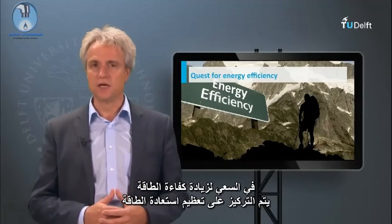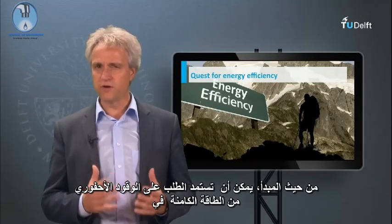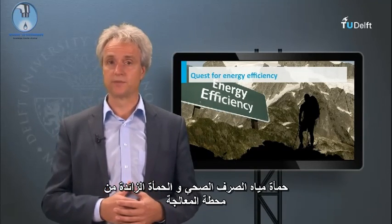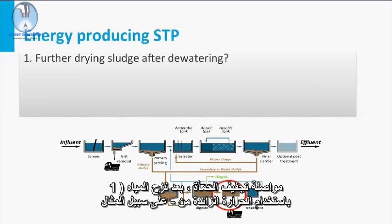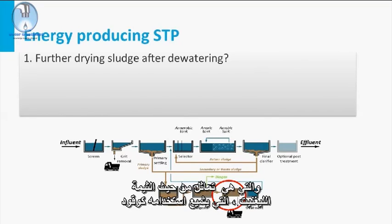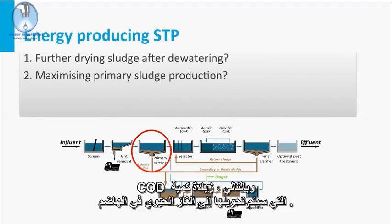In the quest for energy efficiency, a large focus is put on maximizing the energy recovery from excess sewage sludge. In principle, all fossil fuel demand could be derived from the energy bound in the sewage sludge from the treatment plant. Increased energy recovery from sludge could be achieved by: first, further drying of the sludge after dewatering using excess heat from, for instance, the biogas generators. Sludge with a dry solids content of 90% has a heating value of about 10 to 16 megajoules per kilogram, which is in a similar order of magnitude as lignite, commonly used as fuel. Second, maximization of primary sludge production by adding chemicals to the primary clarifier, thus increasing the amount of COD that will be converted to biogas in the digester, while less energy is required for oxidation in the aeration tank.